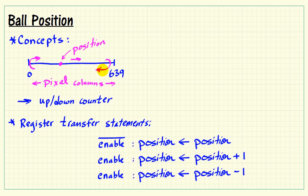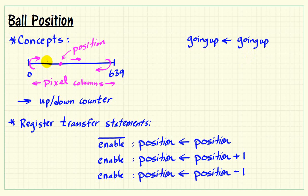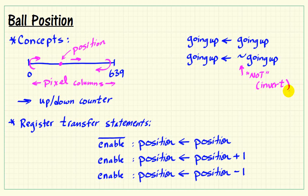As long as it's in the process of increasing, it should get higher. As long as it's in the process of getting lower, it should decrease. We actually need an additional register to keep track of whether we're going up or going down. When going up hits one of these limits, it should be changed to its opposite value — the tilde indicates NOT. Going up is a one-bit register, or a Boolean data type.